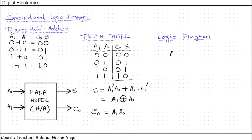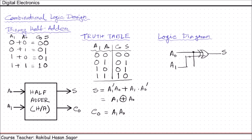Let us draw the logic diagram. We have inputs A0 and A1. The sum output equals A0 XOR A1, so we pass them through an XOR gate. The carry output equals A0 AND A1, so A0 and A1 are fed into an AND gate to give us the carry out. This is the complete logic diagram for the half adder.